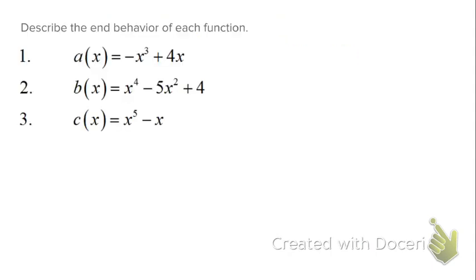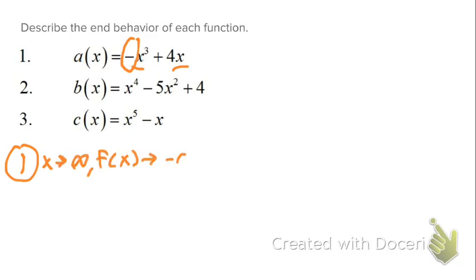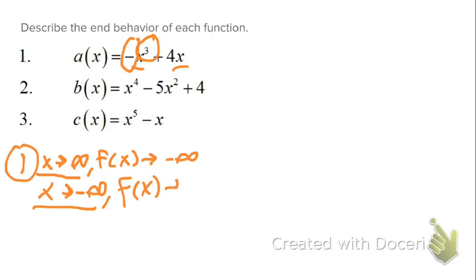So let's describe the end behavior. With number one, the first thing we do is look at the leading coefficient. We've got two variables here; the highest degree would be x cubed. So we look at the coefficient in front of x cubed. That negative tells us as x approaches infinity, f of x will approach negative infinity. Then we look at the degree to see what's happening as x approaches negative infinity. Since the degree is odd, it's going to go in the opposite direction — so f of x will approach infinity. They go in opposite directions because the degree is odd, and it's falling to the right.